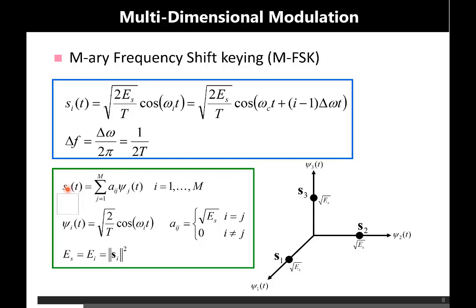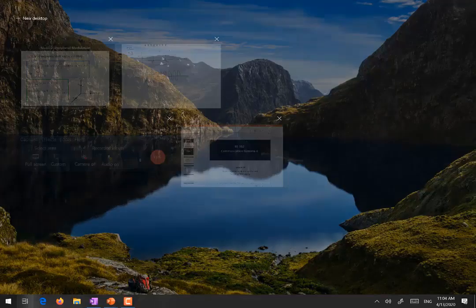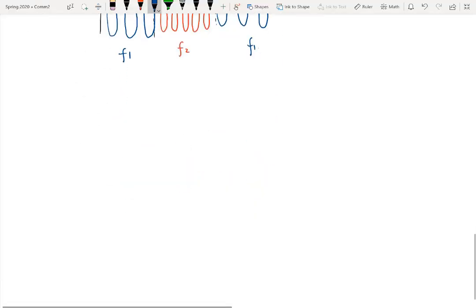Generally, Si(t) can be written in terms of basis functions as the summation from j=1 to M of A_ij · psi_j(t), where psi_j(t) is a cosine with changing frequency omega_i. The amplitudes (coefficients A_ij) are constant in magnitude, but non-zero only when i equals j. This means the signal vectors lie only along the principal axes of the basis functions, as shown in the constellation diagram. To explain this further, let's expand for M equal to 3.